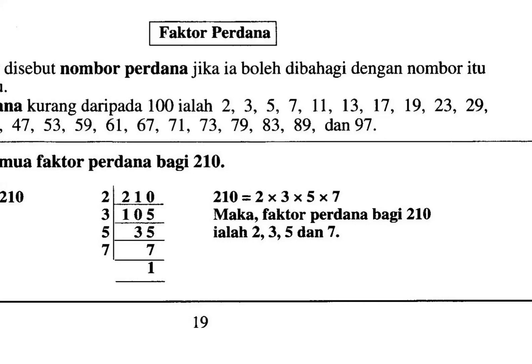7, 11, 13, 17, 19 — 19 pun tak boleh bagi dengan apa-apa nombor. 17 atau 19 pun tidak boleh bagi dengan apa-apa nombor sebenarnya. 23 juga — so 23, can we divide with any numbers? Tak boleh.